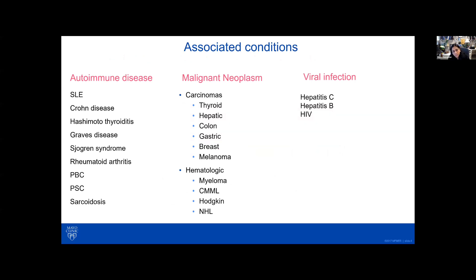Autoimmune diseases associated with this include many, such as systemic lupus erythematosus, Crohn's, Hashimoto's thyroiditis, Graves' disease, and Sjogren's. Malignant neoplasms include both solid epithelial malignancies and carcinomas, as well as hematological malignancies. Viral infections, particularly hepatitis C, have been associated with fibrillary glomerulonephritis, and this is particularly noted in a series from North Carolina.